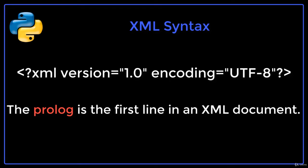The prologue is the first line in an XML document. Having a prologue in your XML document is optional, but if your document does have a prologue, it must be the first line in the document. It starts out with an opening angular bracket, followed by a question mark and the word XML.